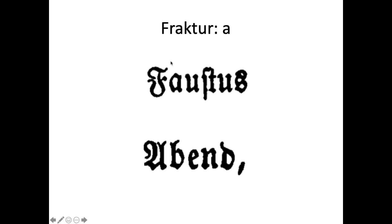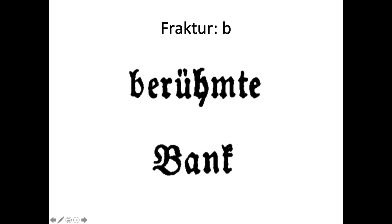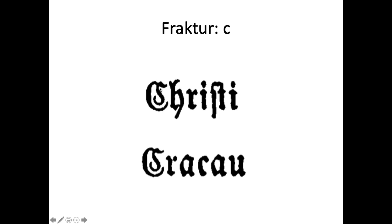Now let's go through the letters. The lowercase A sounds like 'ah' — as in 'Faustus' — and the uppercase A looks a little weird if you're not used to it, like in 'Abend.' The B — 'Berühmte' — is pretty normal looking. The uppercase C in 'Christi' and another uppercase C in 'Krakow' the city. The lowercase C in 'Krakow' looks a little strange but is recognizable.